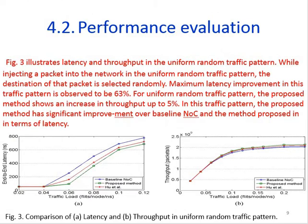Figure 3 illustrates the latency and throughput in the uniform random traffic pattern. While injecting a packet into the network, the destination of the packet is selected randomly. The maximum latency improvement in this traffic pattern is observed to be 63%. The proposed method shows an increase in throughput of up to 5% and shows significant improvement over the baseline NoC and the prior method in terms of latency.